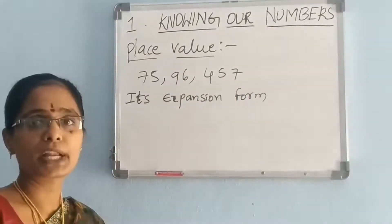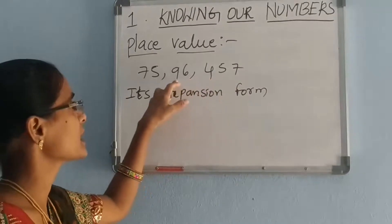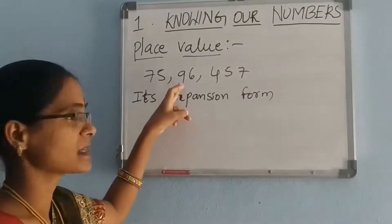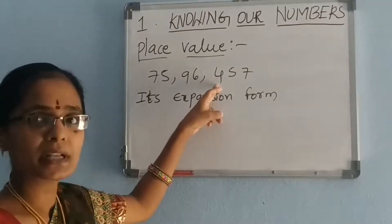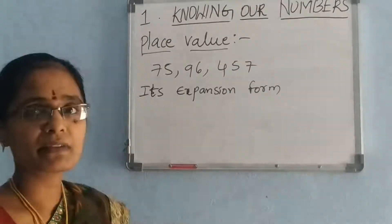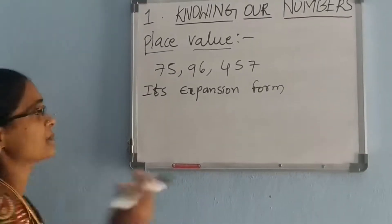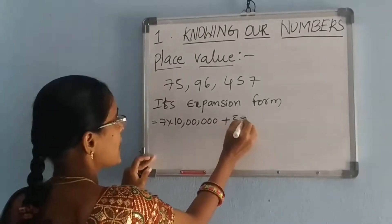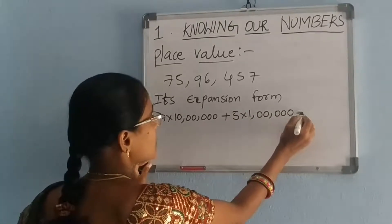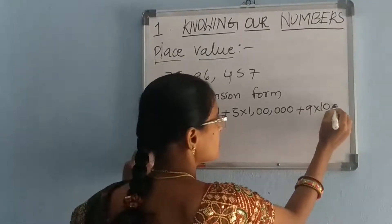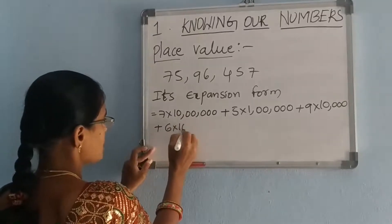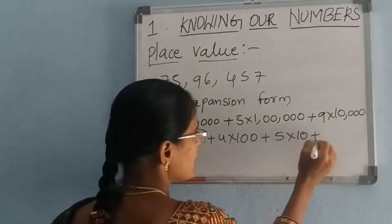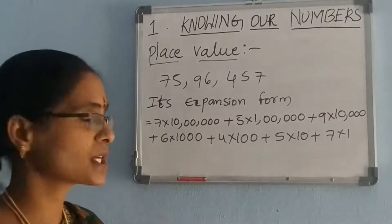In the place value system: ones, tens, hundreds, thousands, ten thousands, lakhs, ten lakhs. 7 is in ten lakhs place, 5 is in lakhs place, 9 is in ten thousands place, 6 is in thousands place, 4 is in hundreds place, 5 is in tens place, 7 is in ones place. So the expansion form is: 7 × 10 lakhs + 5 × 1 lakh + 9 × 10,000 + 6 × 1,000 + 4 × 100 + 5 × 10 + 7 × 1.